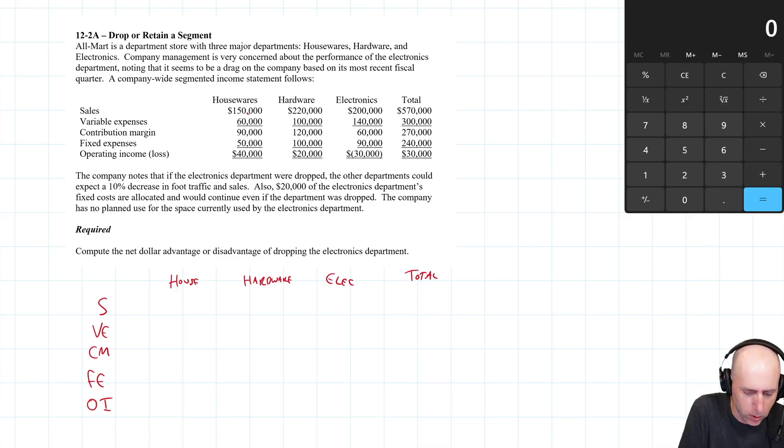Let's start with housewares. What's its sales going to be if we drop electronics? It's going to be down by 10%. So it's 150 now, dropping 10% means it's dropping 15,000. The new sales are going to be 135 if things go according to plan.